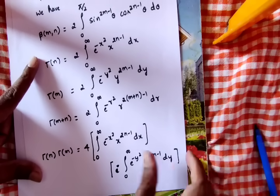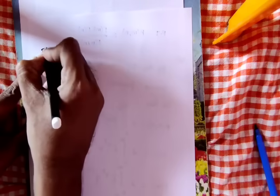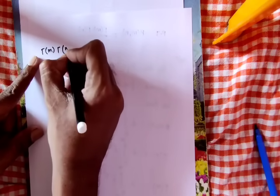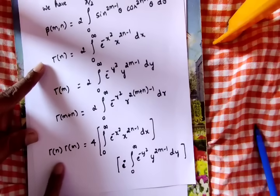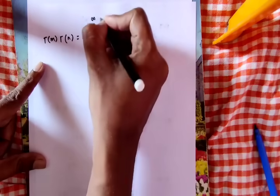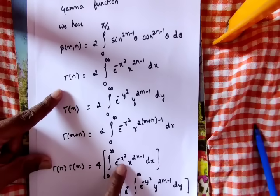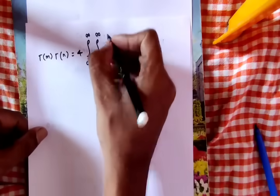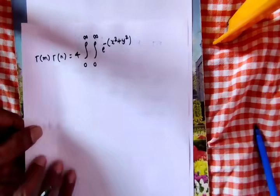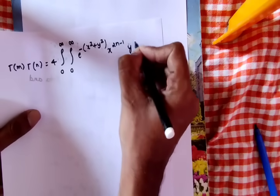Therefore gamma(m) into gamma(n) is equal to 4 times the double integral from 0 to infinity over 0 to infinity of e to the power minus (x squared plus y squared), times x to the power (2n-1) y to the power (2m-1) dx dy.